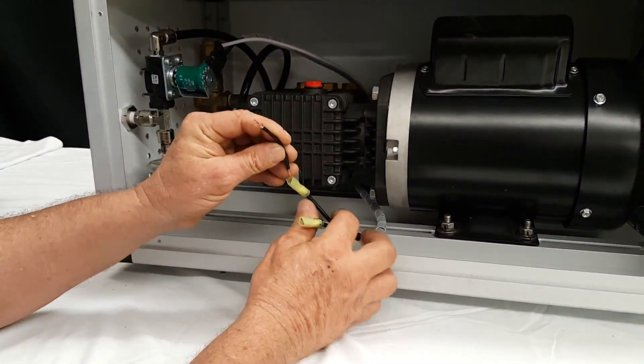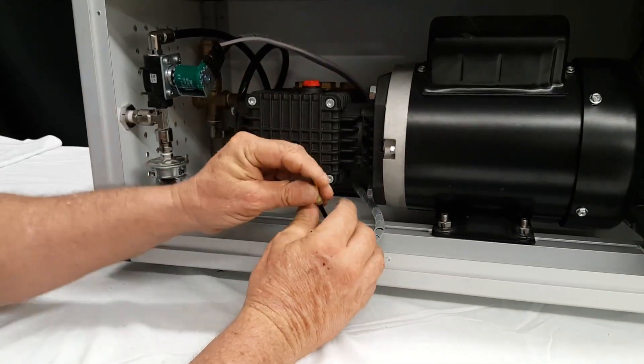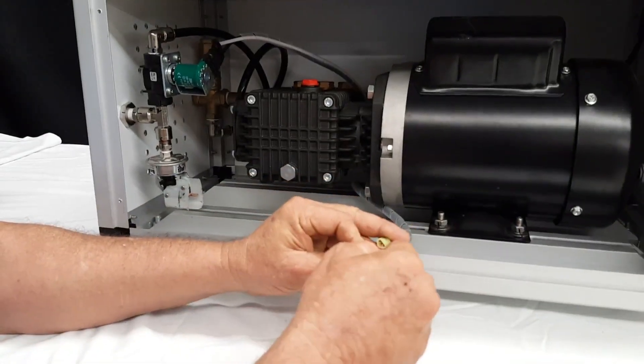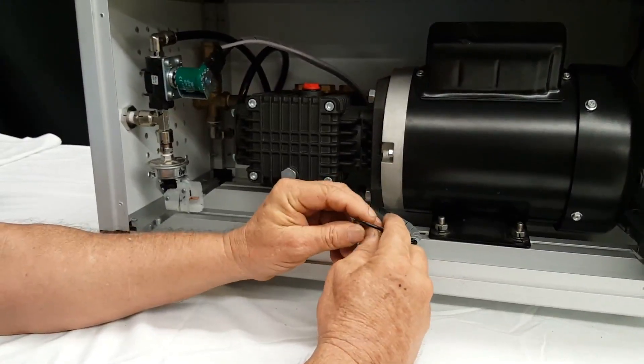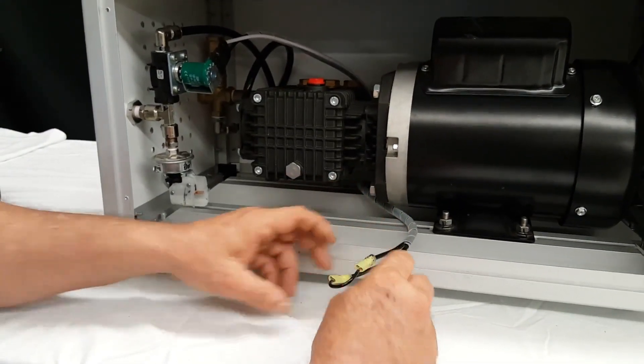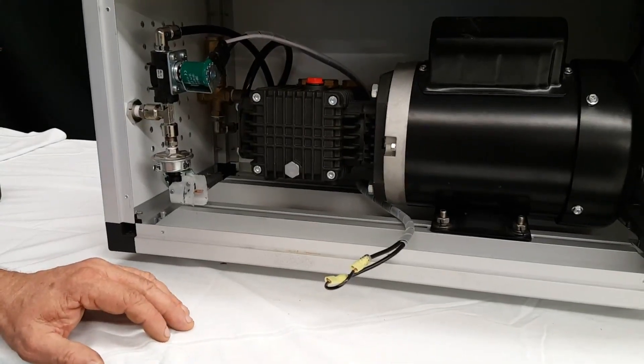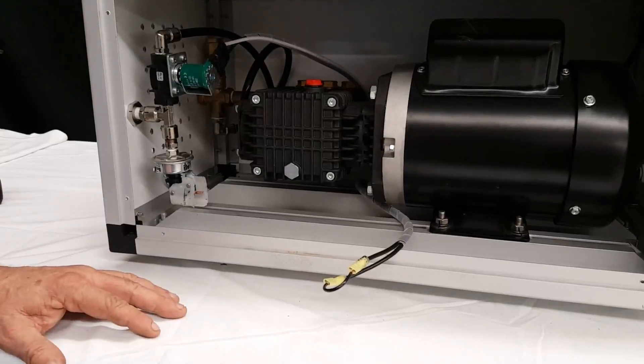Stick one end in here making good contact, then stick the other end into the other one, letting this go somewhere where there's no chance of it sparking or arcing against any metal. Then plug your pump back in and turn the toggle switch on.